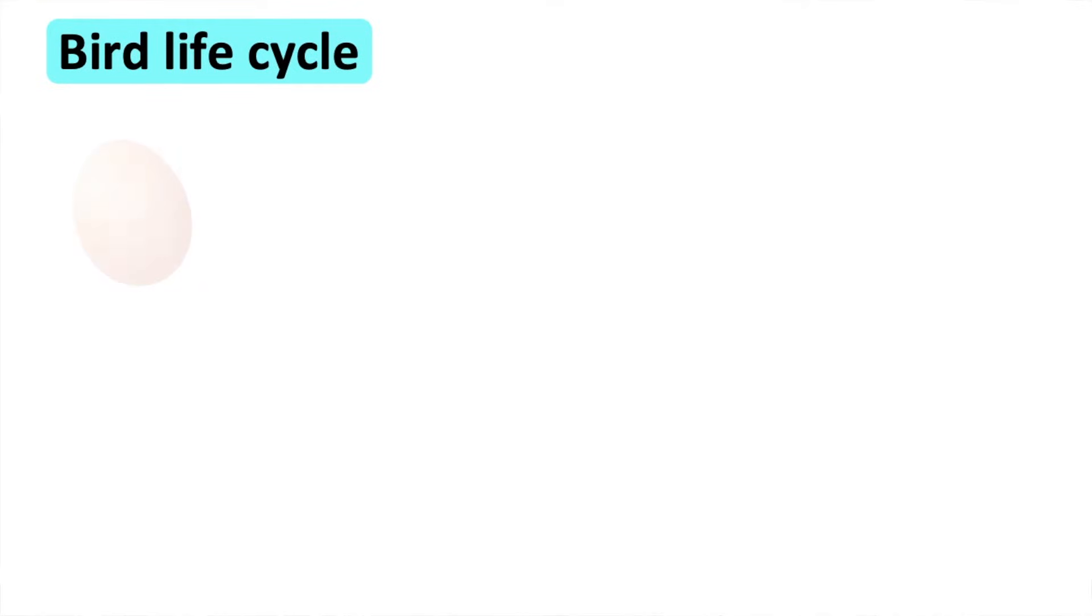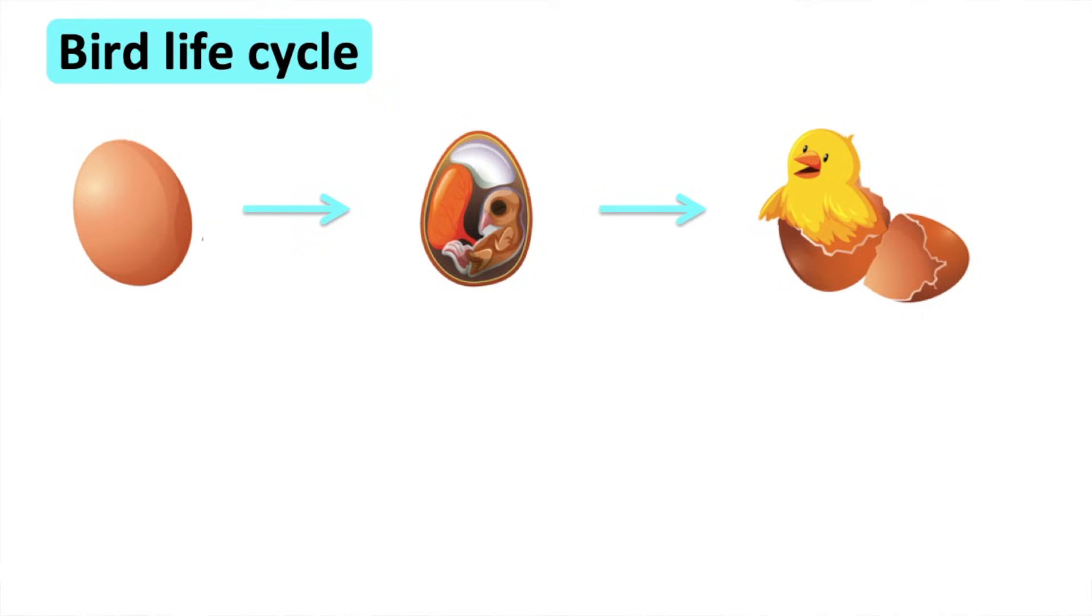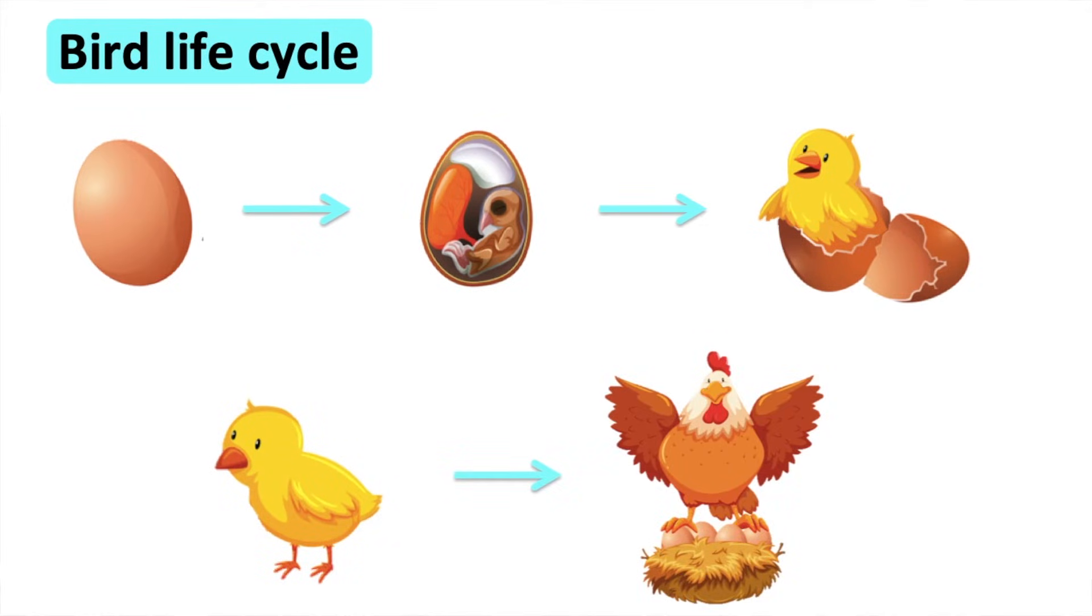Bird life cycle. First the bird lays eggs in a nest. The baby bird develops in the egg. Once it has developed it will begin to crack the egg in order to get out of it. The chick continues to grow until adulthood.